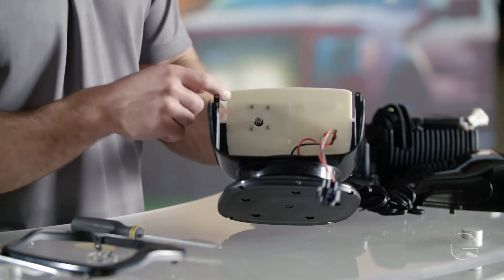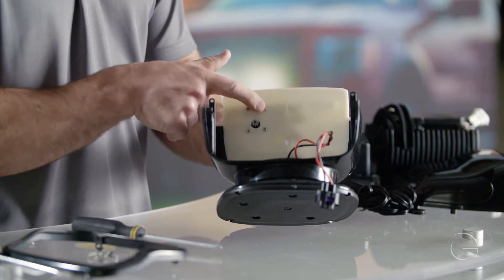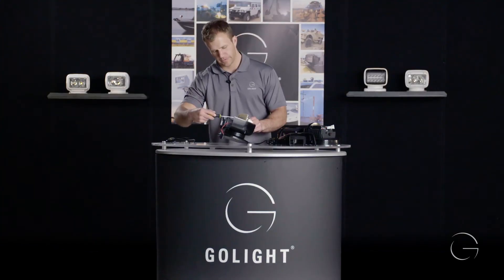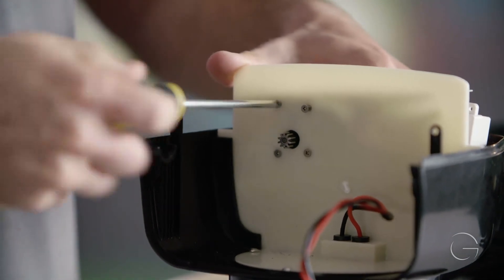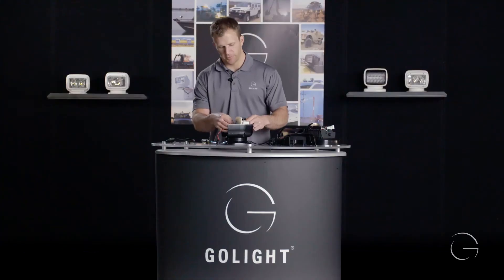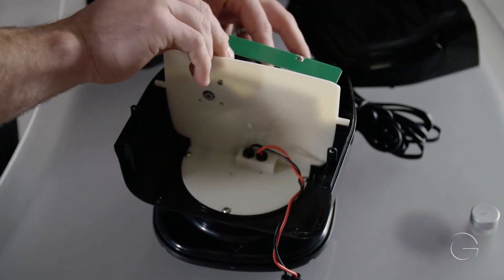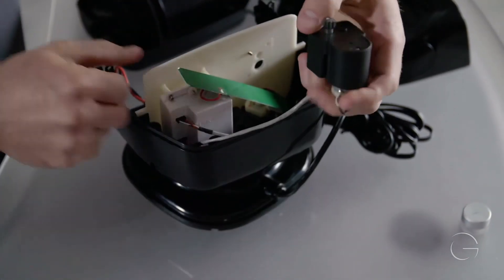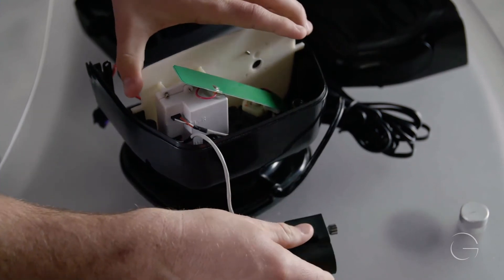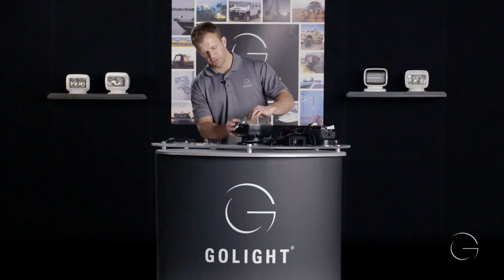Once all four screws are removed, pull the antenna off the motor and you can lift the motor and set it off to the side. Then there is one screw here in the top of the white receiver box that you will need to remove.